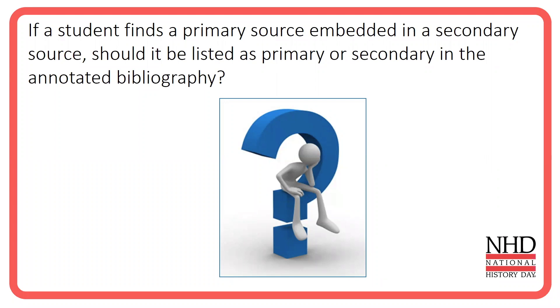One of the most common questions we get here at National History Day is this: if a student finds a primary source that's embedded in a secondary source, should it be listed as primary or secondary in the annotated bibliography?